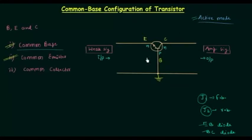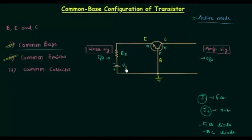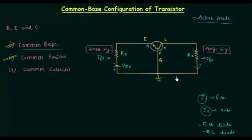In active mode, I will forward bias EB. This resistance is RE. The emitter is N-type material and base is P-type material, so emitter is connected to the negative terminal and base is connected to the positive terminal. I will call this forward biasing potential VEE. Now I will reverse bias the diode BC. This resistance is RC. The collector is N-type material and base is P-type material, so to reverse bias BC, collector is connected to the positive terminal and base to the negative terminal.